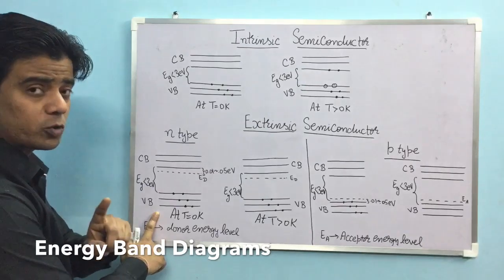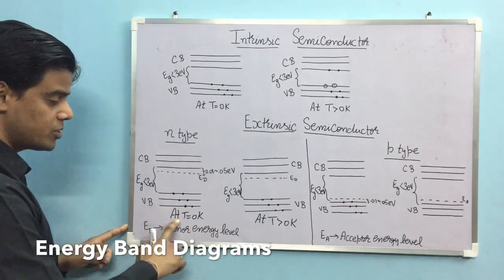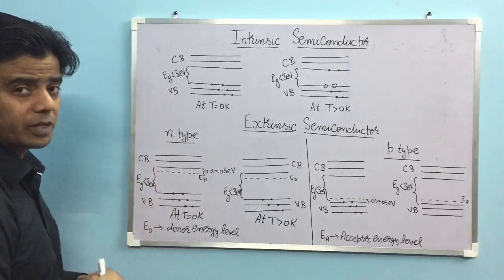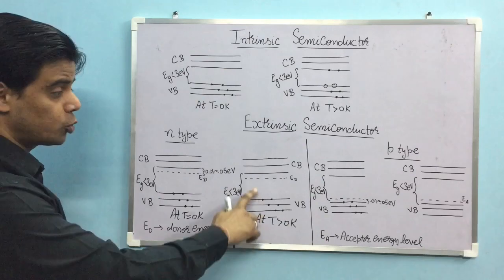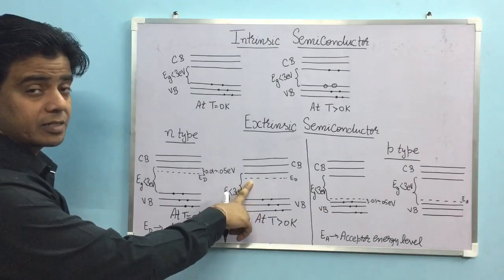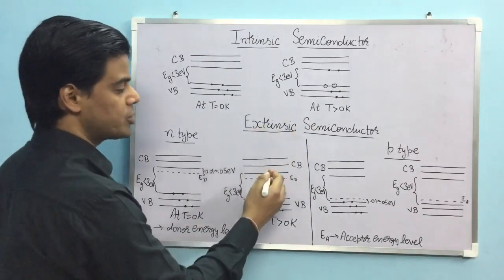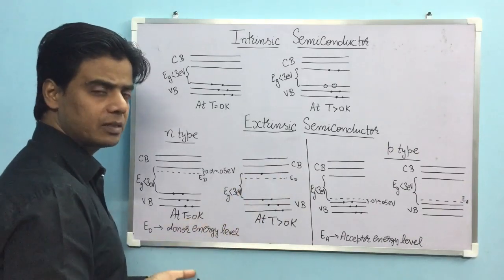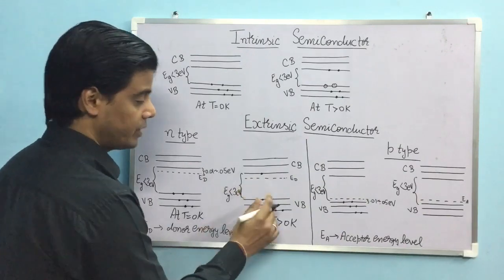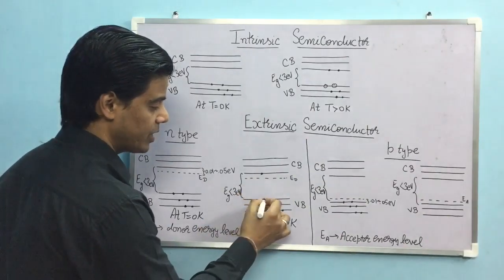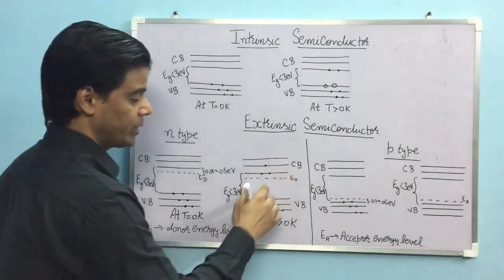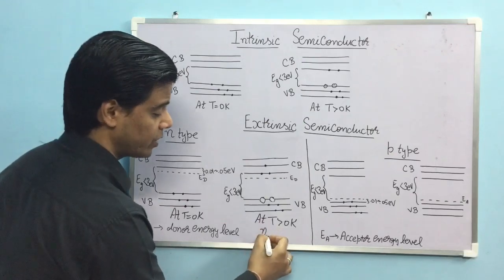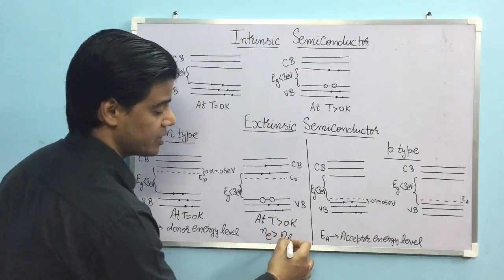At t equal to 0 Kelvin, the conduction band is empty, so the N-type semiconductor behaves as an insulator. As temperature increases, electrons at the donor energy level require very little energy to jump into the conduction band. If additional energy is given, even bonded electrons from the valence band can jump up, creating vacancies. The number of electrons is greater than the number of holes.